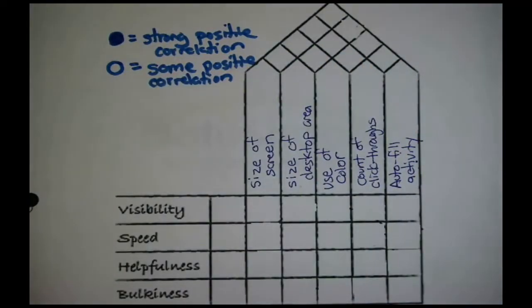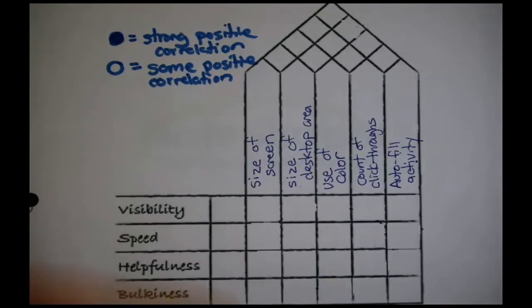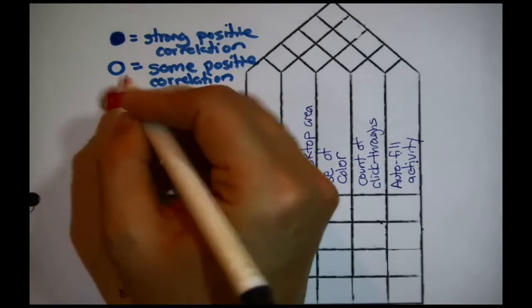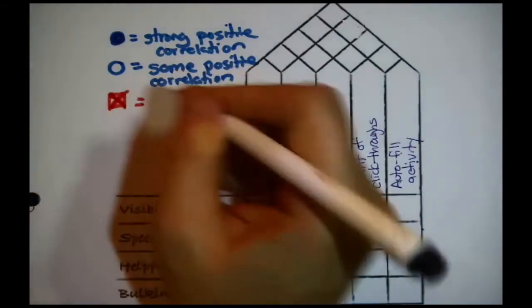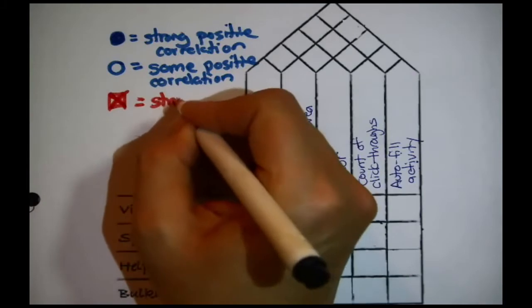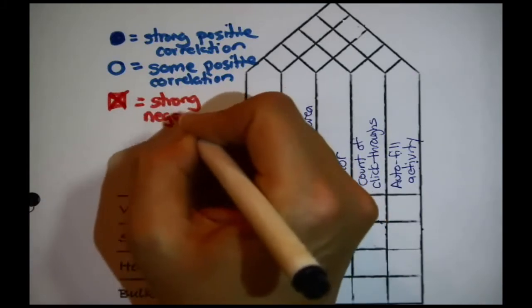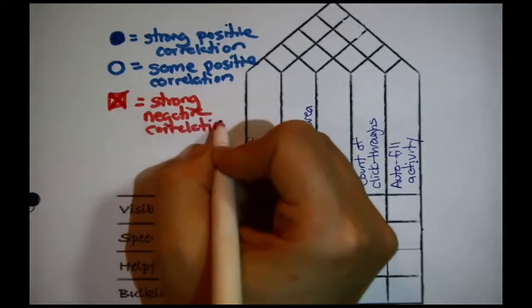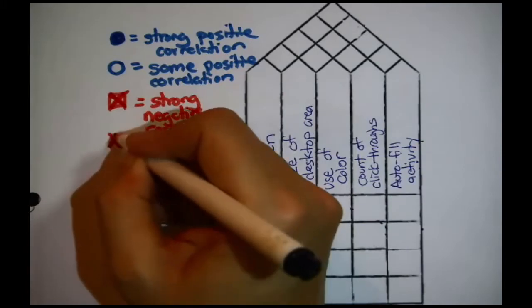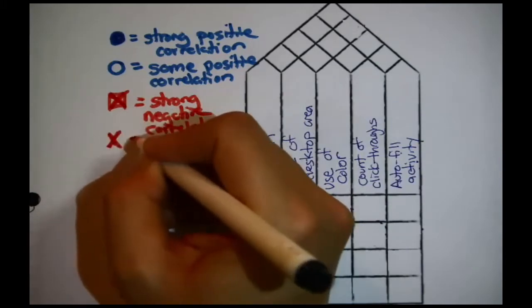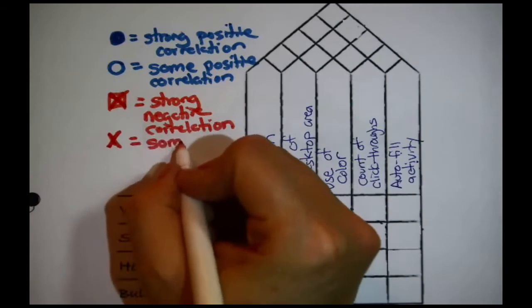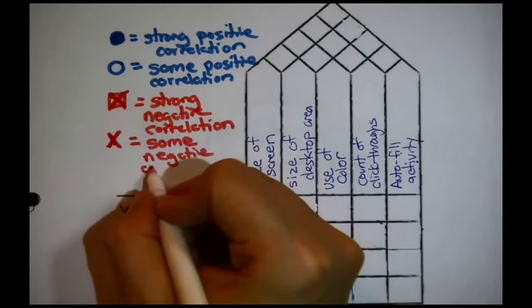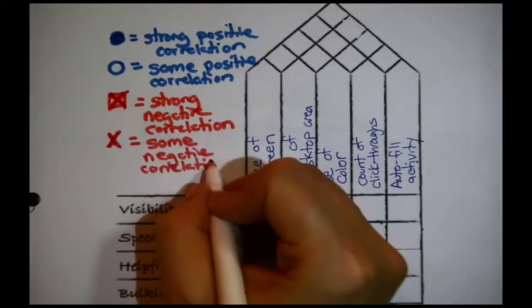Okay, now, wait, wait, I need a symbol for, how's this, don't want to mistake it for the other one, an X with a box around it, strong negative correlation. When one is large, the other one tends to be small and vice versa. And then how about just a plain X, doesn't have the frame around it for, again, not strong, but some negative correlation.